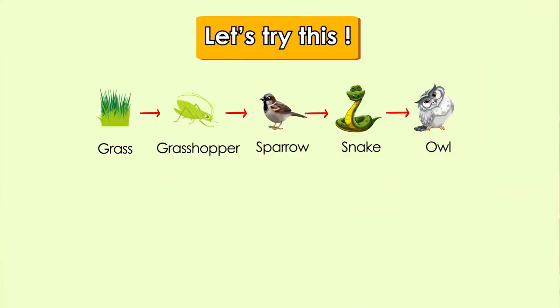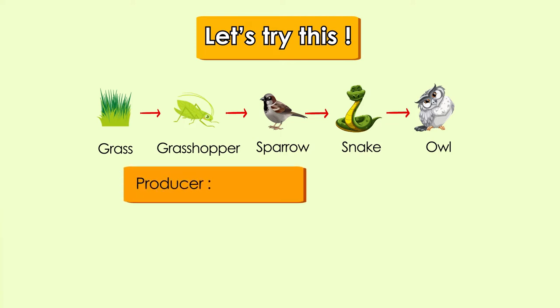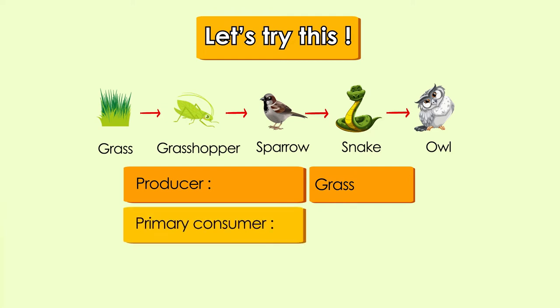Shall we try to answer some questions? Look at the food chain shown on the screen. Based on the food chain, can you name the producer? The producer is the grass. Can you identify the primary consumer? It's the grasshopper, because the grasshopper eats the grass, which makes it the first eater.